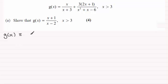So g of x is identical then to x over x plus 3 and then we're adding to this the other fraction 3 times 2x plus 1 and that's all divided by the quadratic expression x squared plus x minus 6.